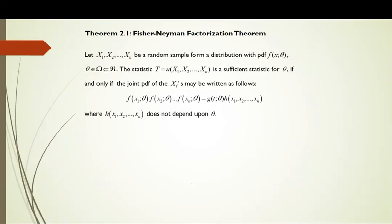Suppose that we have x1, x2, ..., xn, a random sample which forms a distribution with probability density function denoted as f(x|theta), where theta belongs to omega for any real number. The statistic t, which is a function of the random sample x1, x2, ..., xn, is a sufficient statistic for theta if and only if the joint PDF of the xi may be written as follows.